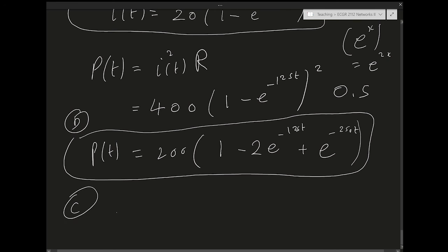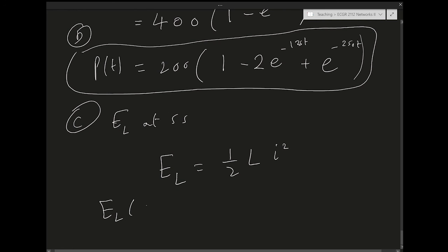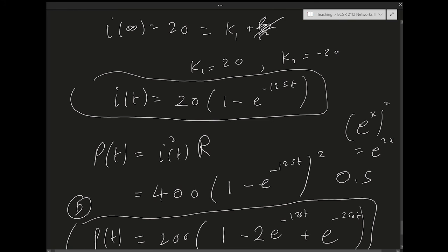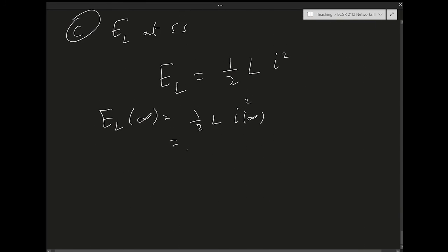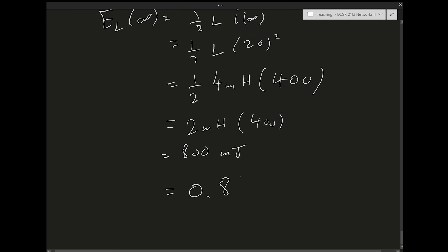Part C: energy stored in the inductor at steady state. The energy in an inductor is E_L = ½L·i(∞)². At steady state i(∞) = 20A. So E_L = ½ × 4mH × 400 = 2mH × 400 = 800mJ = 0.8 joules.